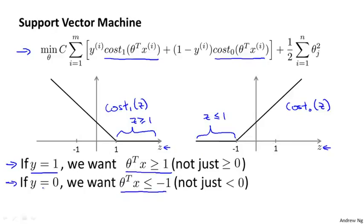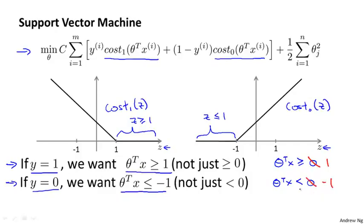This is an interesting property of the support vector machine. If you have a positive example, so if y equals one, then all we really need is that theta transpose x is greater than or equal to zero, and that would mean we classify correctly. But the support vector machine wants a bit more than that — don't just barely get the example right. What it really wants is for theta transpose x to be quite a lot bigger than zero, maybe greater than or equal to one, and much less than zero for negative examples, maybe less than or equal to minus one. This builds in an extra safety margin factor into the support vector machine.